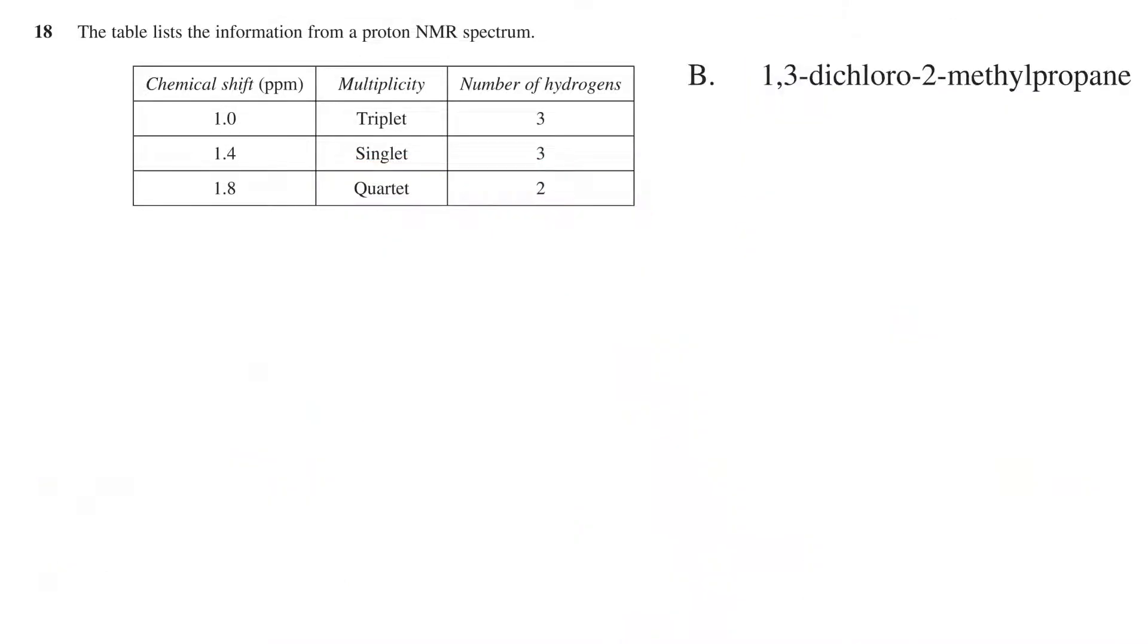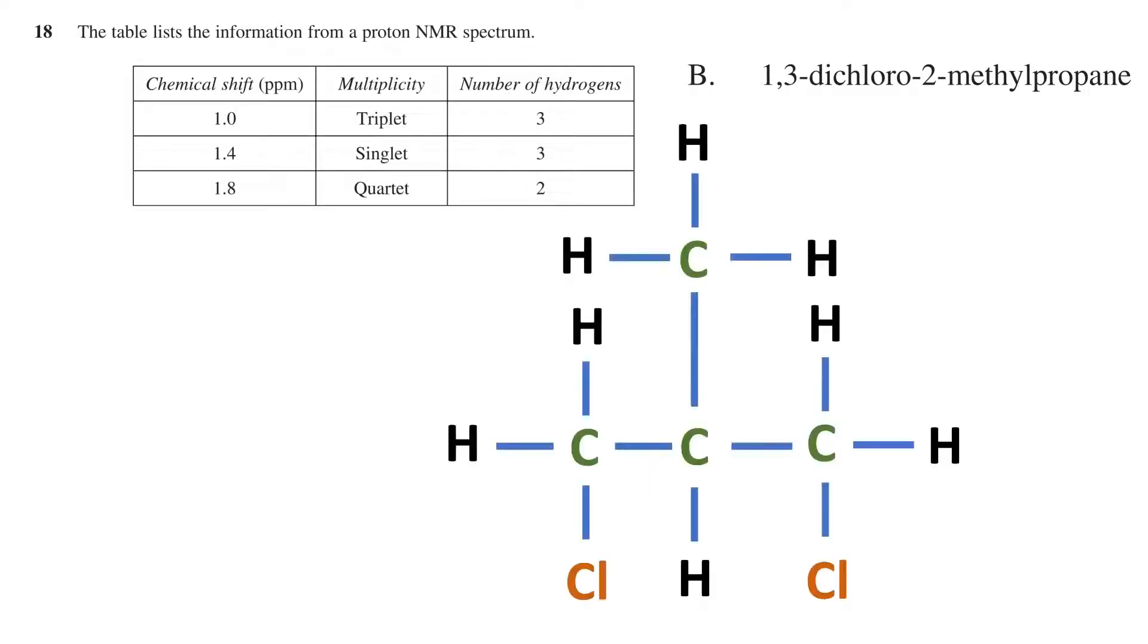Next, option B is 1,3-dichloro-2-methylpropane. Drawing this out, we have this structure for the molecule. As drawn here, we label the carbons left to right as 1 to 3. Just as in the table, we have three hydrogen environments.